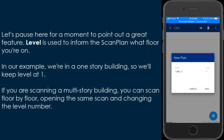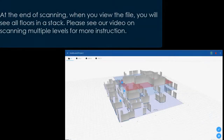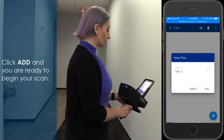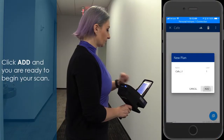Let's pause here for a moment to point out a great feature. Level is used to inform the Scan Plan what floor you're on. In our example, we're in a one-story building, so we'll keep Level at 1. If you are scanning a multi-story building, you can scan floor by floor, opening the same scan and changing the level number. At the end of scanning, when you view the file, you will see all floors in a stack. Please see our video on scanning multiple levels for more instruction. Click Add and you are ready to begin your scan.